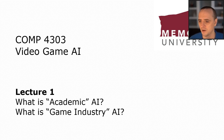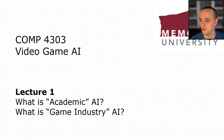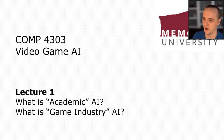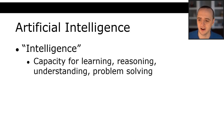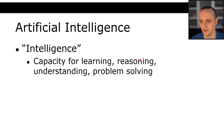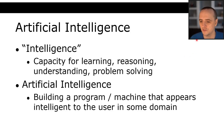This course is all about AI for video games, and it turns out there is a difference between AI and game AI — specifically between how academics work on artificial intelligence and how people in the game industry work on it. Artificial intelligence is the capacity for learning, reasoning, understanding, and problem solving: essentially building a program that appears intelligent to the user in some domain. Strong or general AI — building a system good at everything — is what companies like Google and Tencent are pursuing.